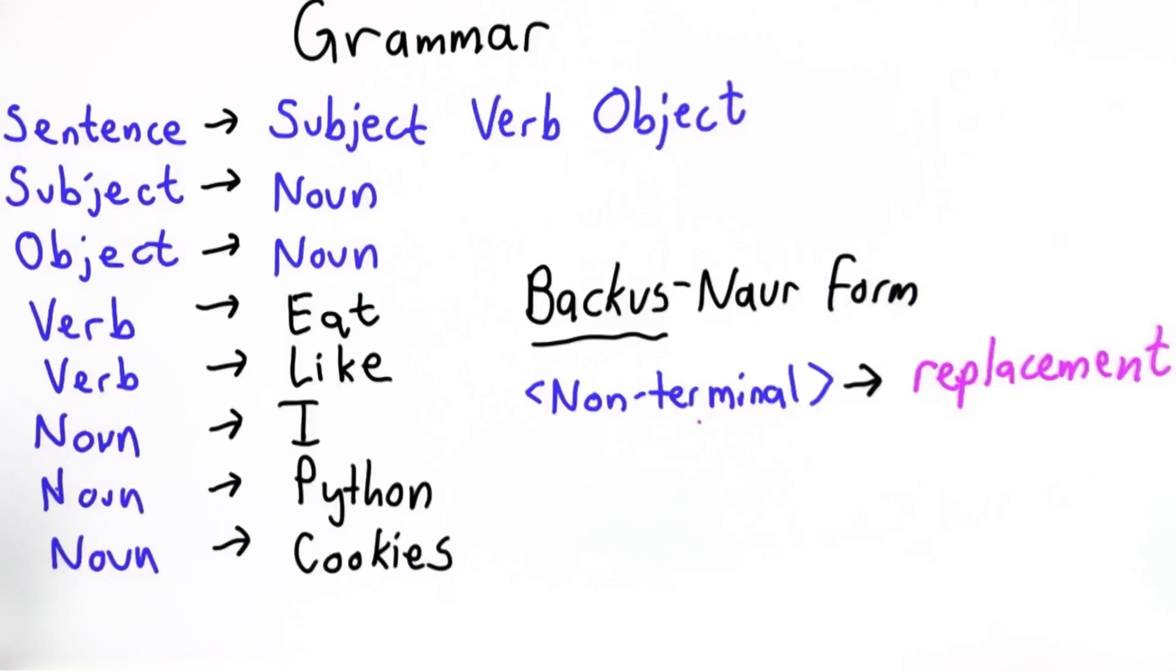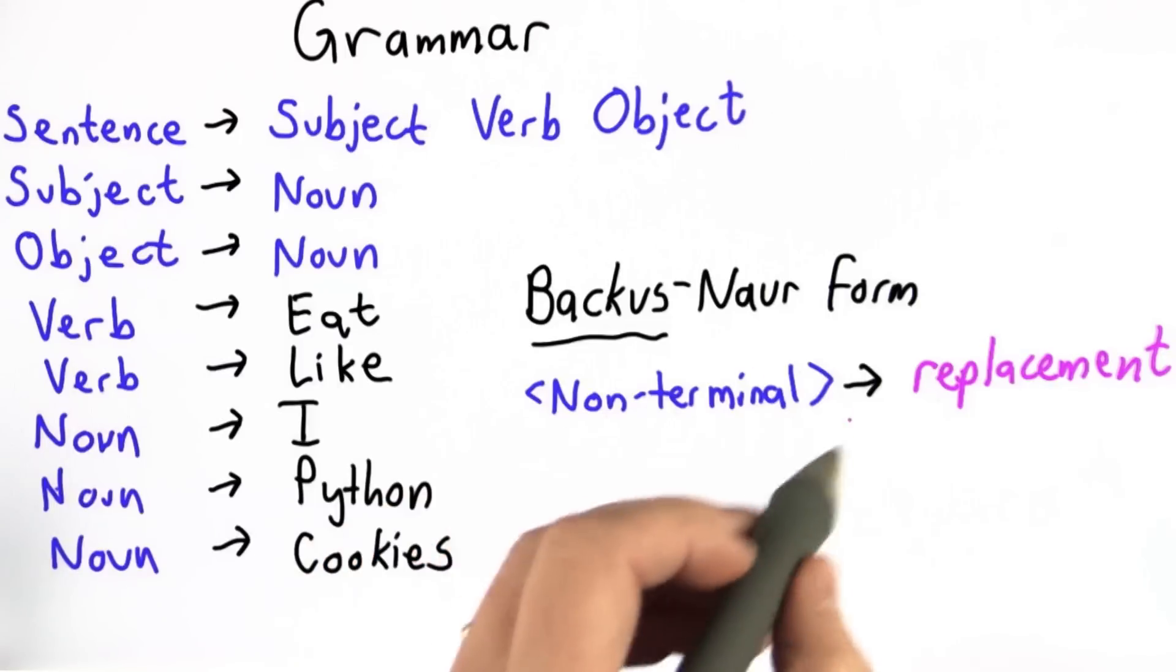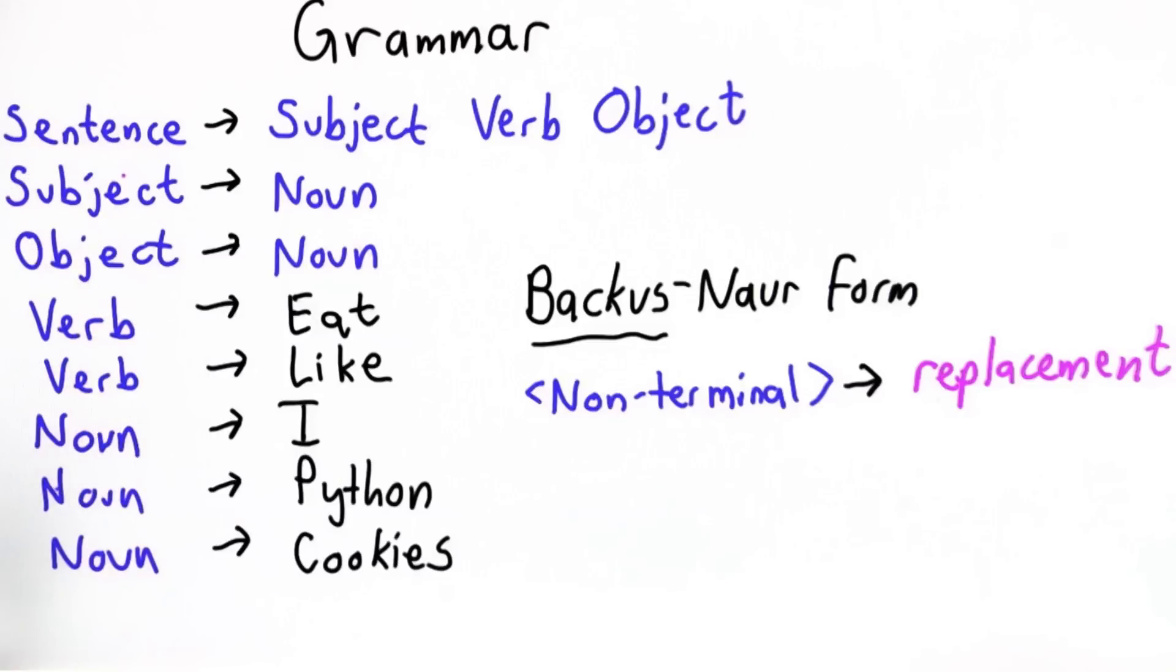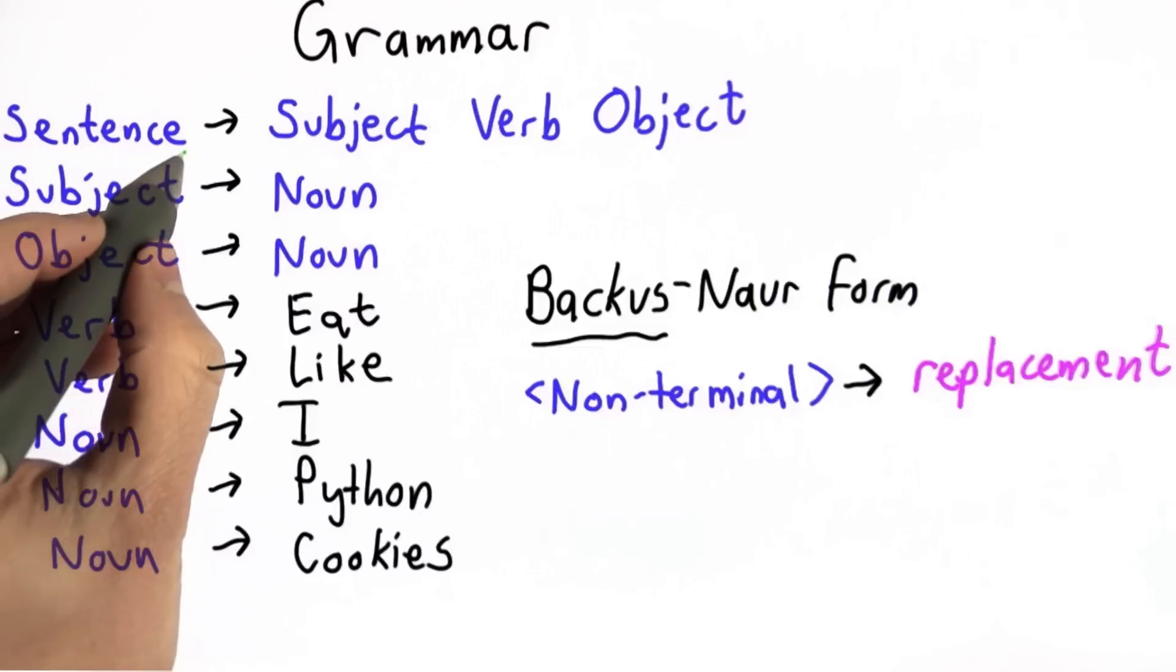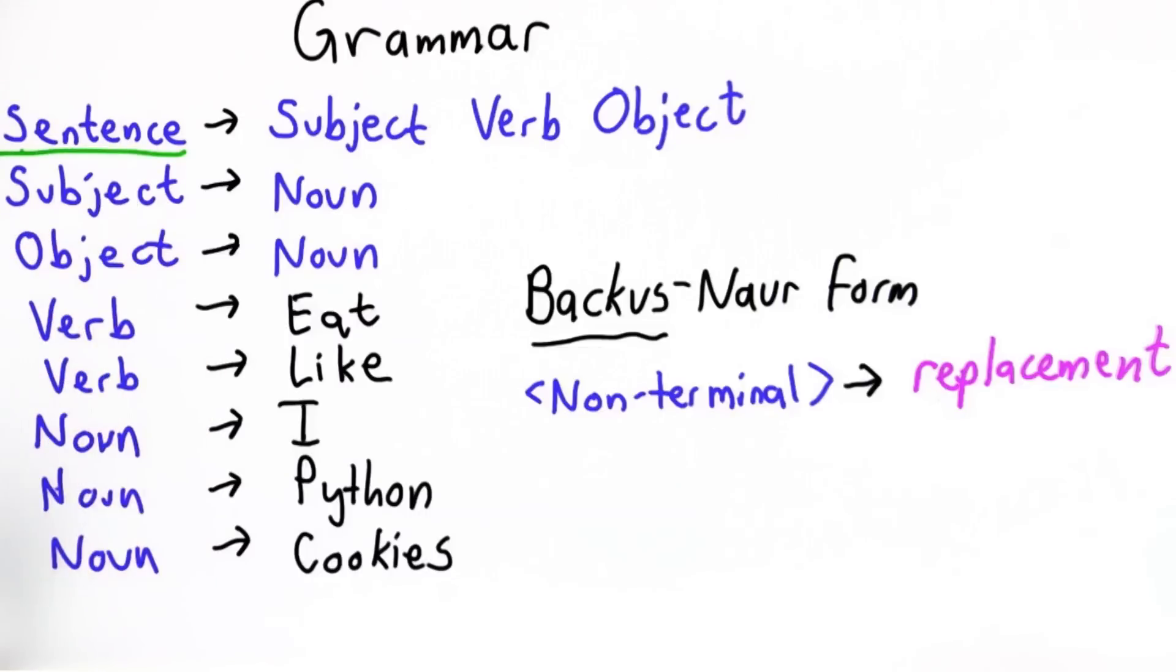We can form a sentence by starting from some non-terminal, usually whichever one is written at the top left. In this case, the one I called sentence, and then by following the rules, we keep replacing non-terminals with their replacements until we're left with only terminals.